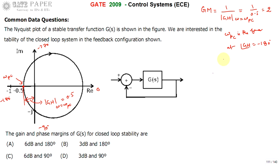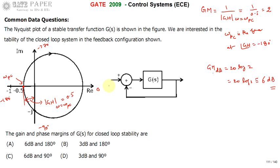Gain margin equals 1 divided by 0.5, which is 2. You must express this in decibels: gain margin in dB equals 20 log(2), which is approximately 6 dB. So the answer can be either A or C — after calculating the phase margin we can confirm which one.